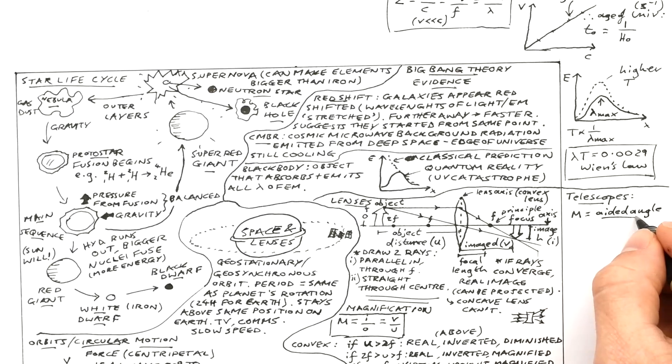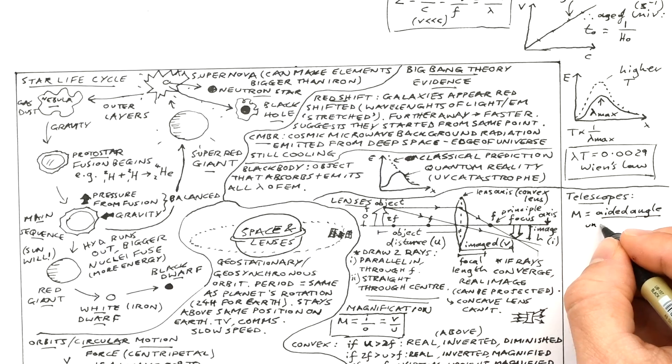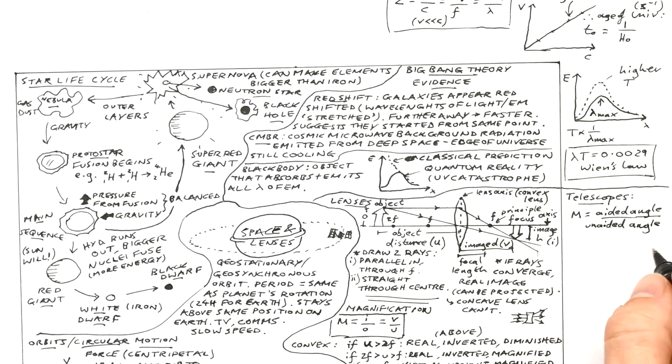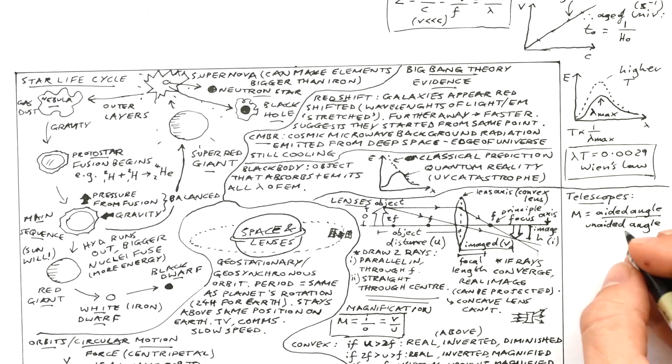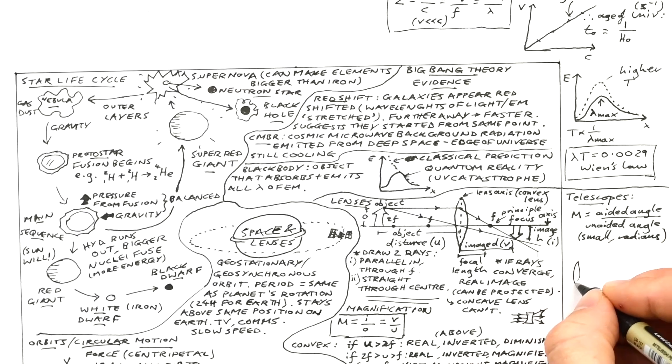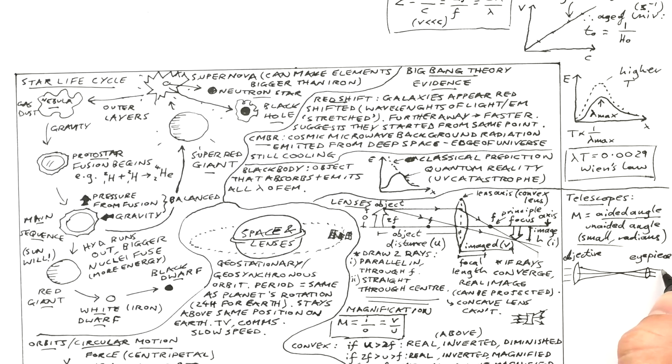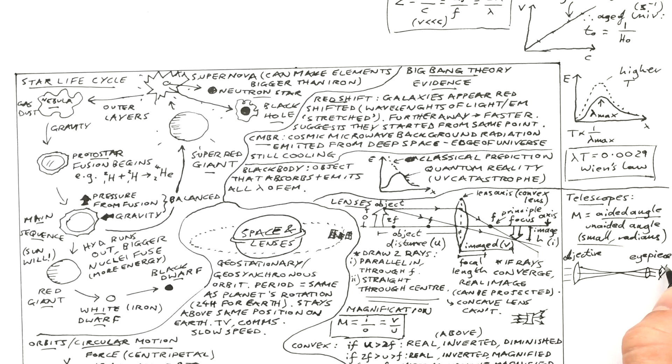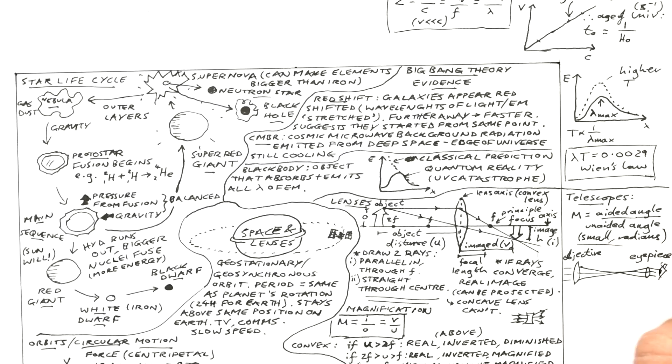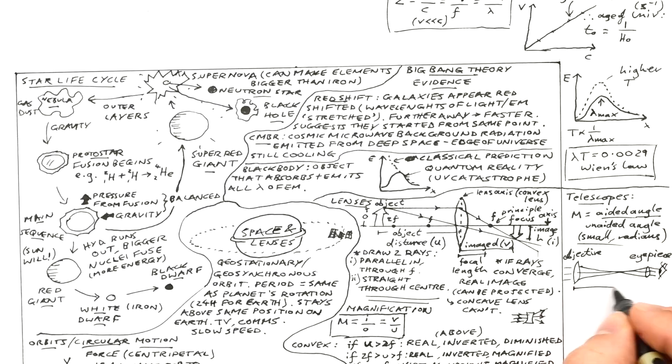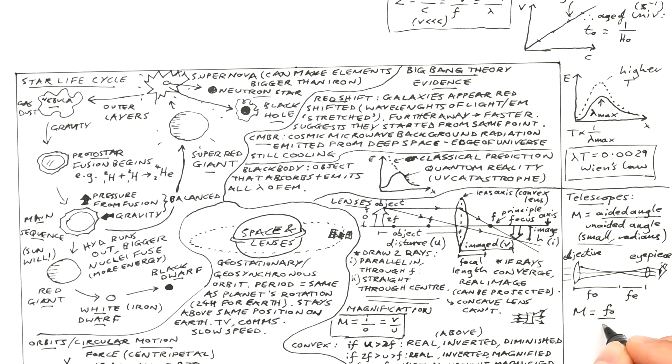For telescopes we can calculate magnification two more ways as well. First way is just by taking the angle that an object covers or subtends when we look at it through a telescope and divide that by the angle that it subtends when we're just looking at it with the naked eye. This only works if we're dealing with very small angles and we have to be in radians as well. A refracting telescope consists of an objective lens and an eyepiece lens. Because the rays come in parallel and we want them to go out parallel as well that means that we have a point between the two lenses where the rays all meet. That means the length of the telescope is going to be equal to the focal length of the objective lens plus the focal length of the eyepiece lens. And actually magnification is given by F0 divided by Fe.